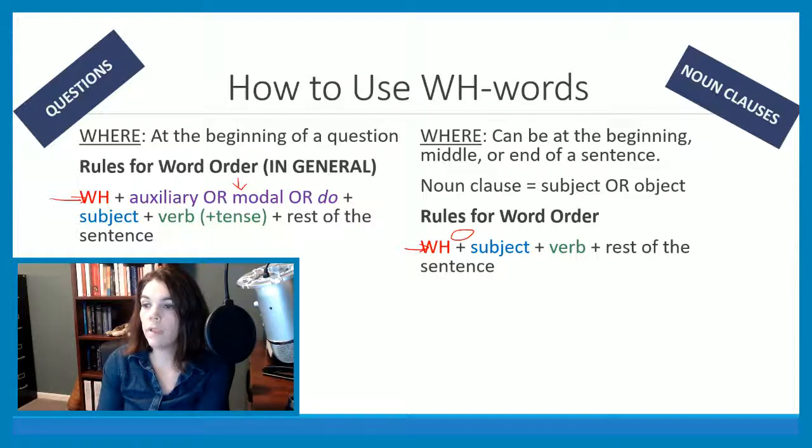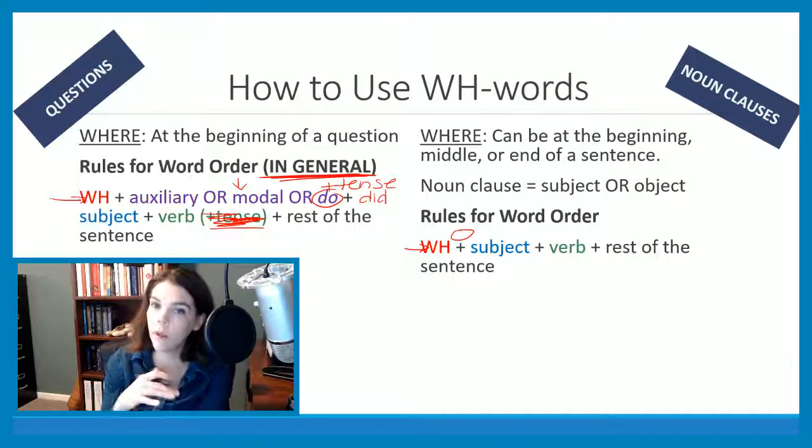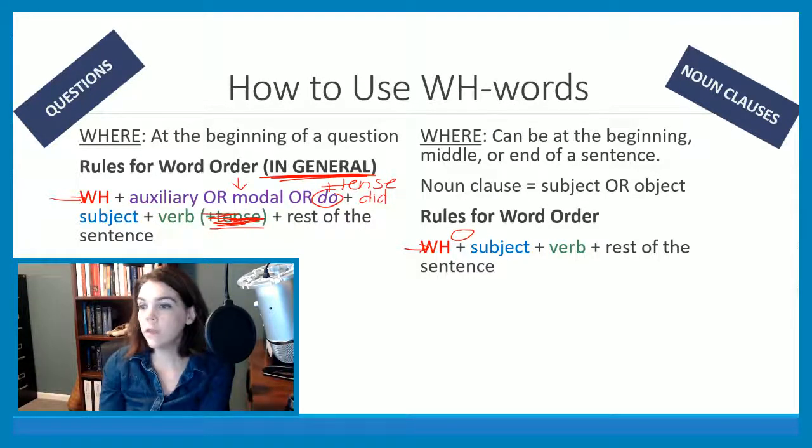And I'll add here that what I mean by tense is, your do is going to carry past tense, you could have did there. Or if you had like present perfect, you would have have here instead of do. So I'm getting pretty general with this word order right now because the word order in questions is really complex. So I don't want to go over all the rules right now, but just in general, the big difference is that our auxiliary and our modal and our do are not used in noun clauses. So let me give you some examples of that.